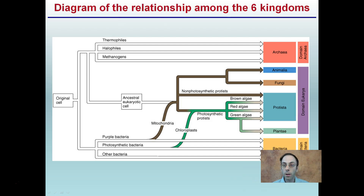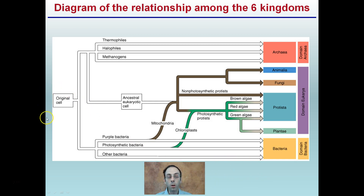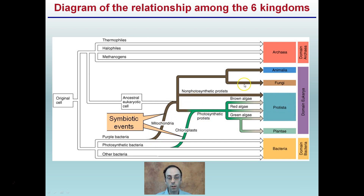How does this look in the diagram of relationships among the six-kingdom system? Here's our original cell, and we notice division points beyond there. Whatever shares the same division point shares that common ancestor. These three different archaea are very closely related and very distantly related to, say, bacteria. Notice here we see our mitochondria and chloroplasts kind of bridging this gap from bacteria to the kingdom of eukarya — these are symbiotic events that occurred in both our photosynthetic bacteria and our purple bacteria with the mitochondria, relating to the endosymbiotic theory, where mitochondria and chloroplasts were once free-living bacteria incorporated into eukaryotes.